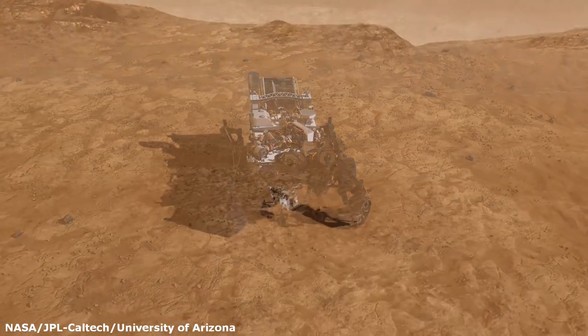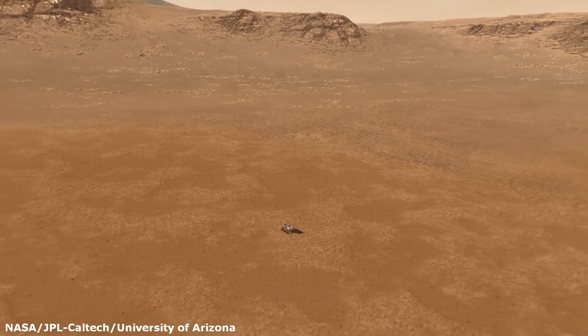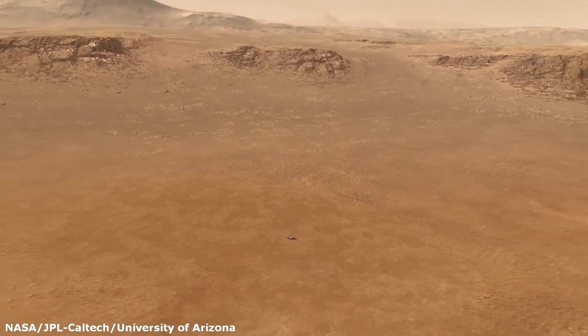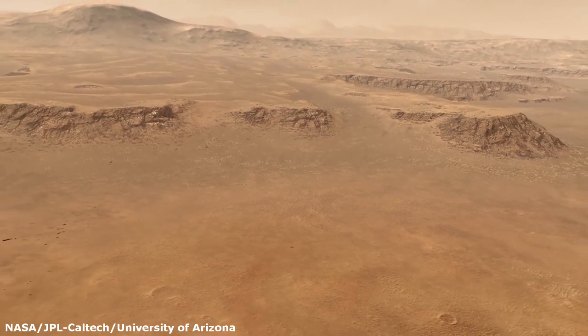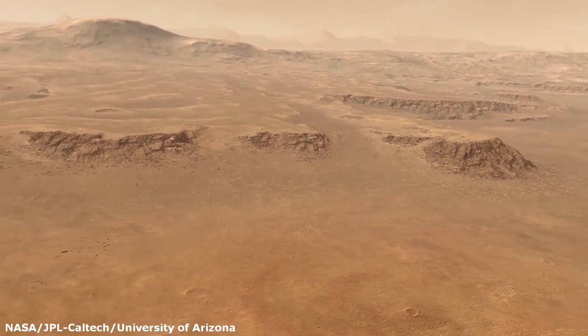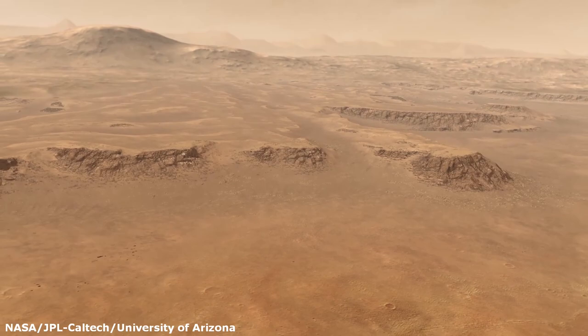The rover will climb the gentle slopes behind it, about 100 meters high, that mark the edge of the delta and will investigate for signs of past microbial life. It will later move on to the hills behind, rising 500 meters, marking the shores of the ancient lake.